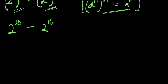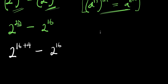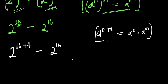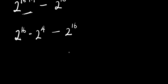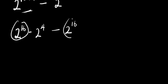Right now we have 2²⁰. And 20 is simply the sum of 16 and 4. So what we have is 2 to the power of 16 plus 4, minus 2 to the power of 16. Now applying the rule aⁿ⁺ᵐ = aⁿ × aᵐ right here, we will have 2 to the power of 16 times 2 to the power of 4, minus 2 to the power of 16.